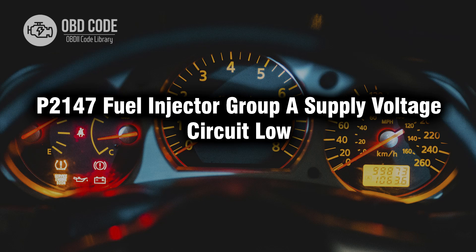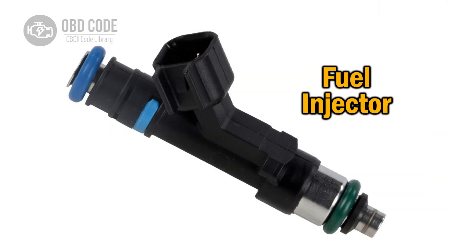Welcome. In this video we will talk about code P2147, its symptoms, causes and possible solutions. P2147 code indicates a low voltage condition in the fuel injector group A supply circuit.